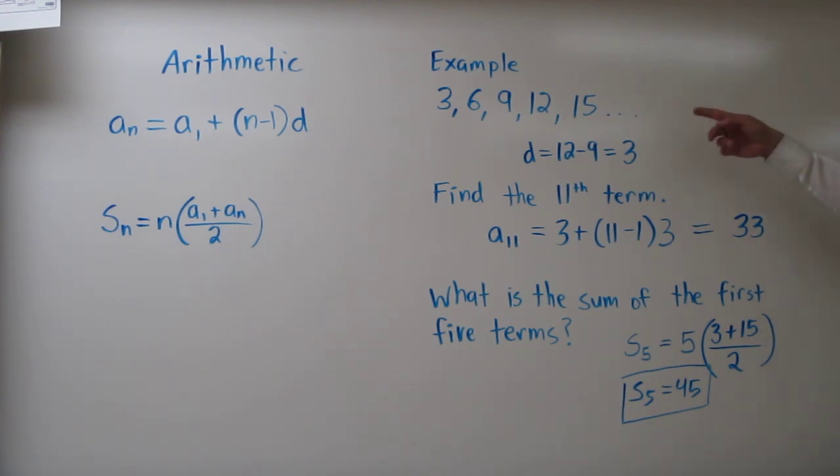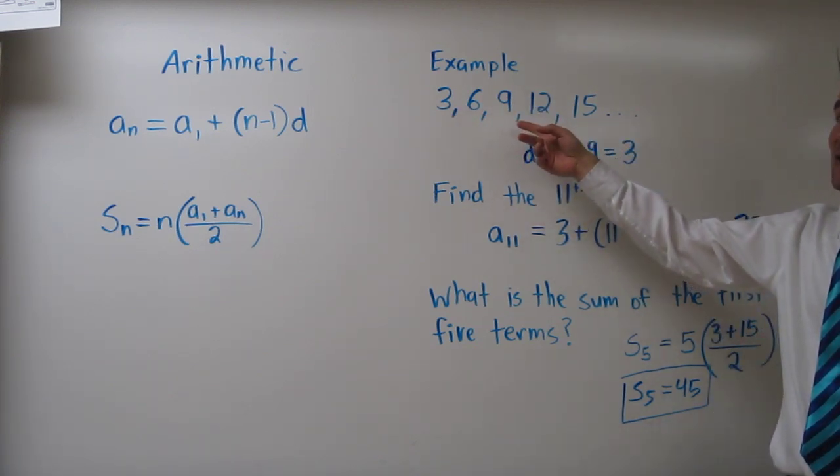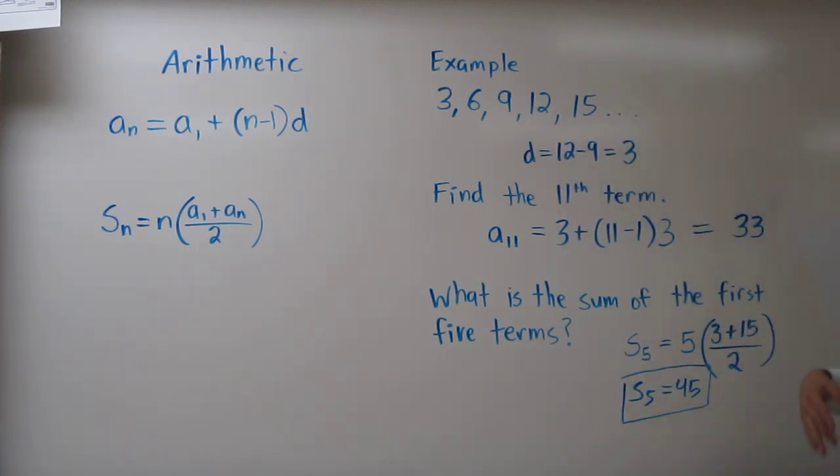We can confirm this by actually adding up these terms. 3 plus 6 is 9, plus another 9, 18, plus 12 is 30, and another 15 is 45. So it works.